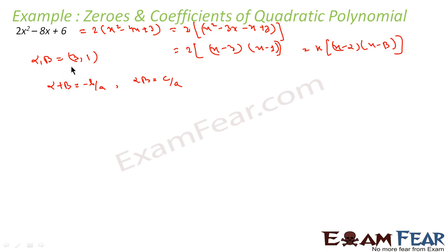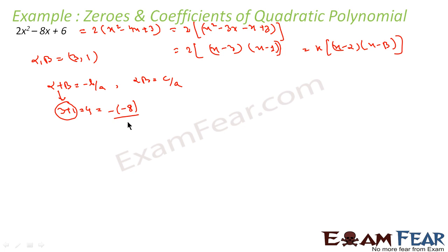First, let's find α + β. Since we know alpha and beta, α + β = 3 + 1 = 4. Now let's find the value of −B/A: −B/A = −(−8)/2 = 8/2 = 4. So we see 4 = 4.